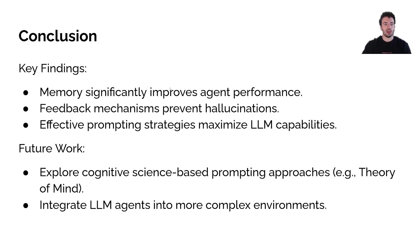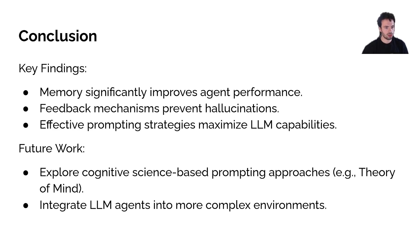We have three main key findings from this work. First, memory significantly improves agent performance for LLM-based agents. Second, feedback mechanisms prevent hallucinations and help improve performance. And finally, effective prompting strategies maximize the capabilities of language models and allow us to get the most out of cheaper models like Llama 70B.